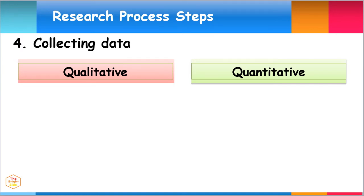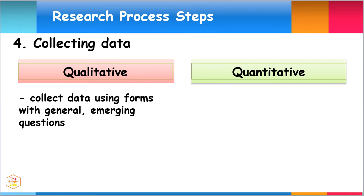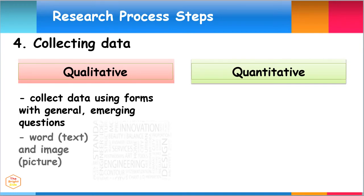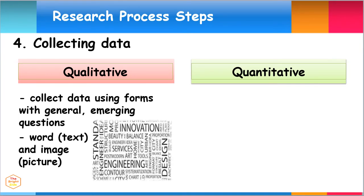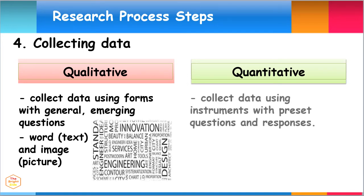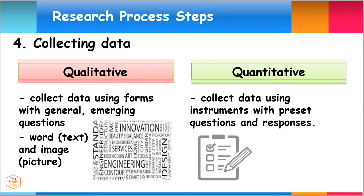In qualitative research, collecting data may be done using forms with general, emerging questions to permit the participants to generate responses. It gathers word or text and image or picture data. In quantitative research, collecting data is done by using instruments with preset questions and responses.